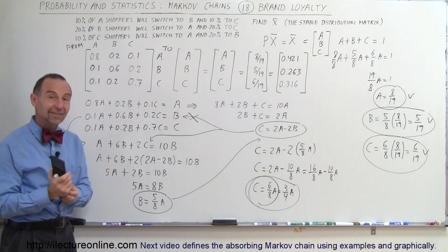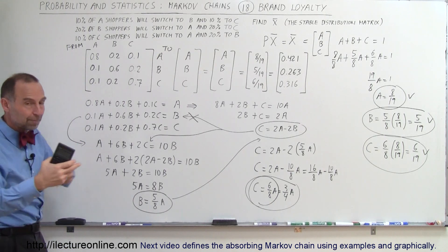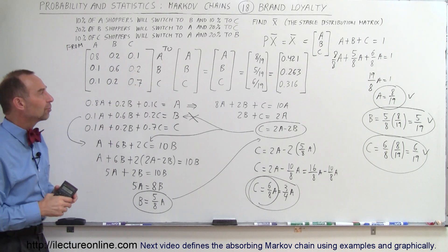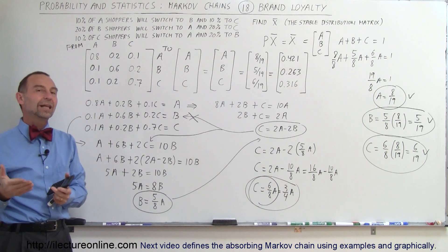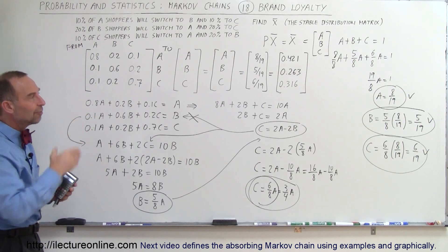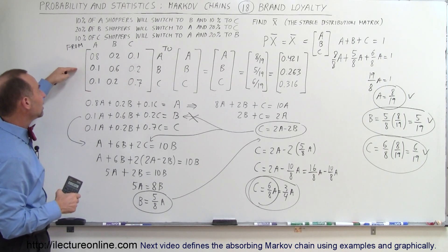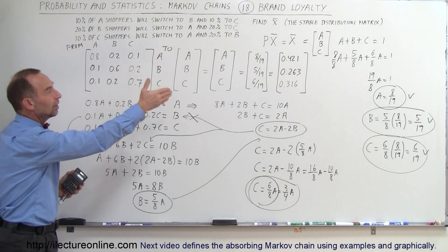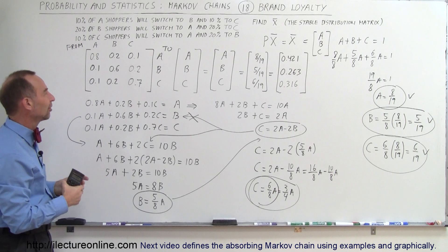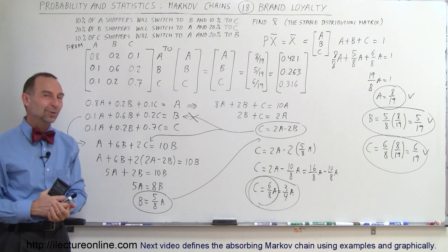This is how we find the stable distribution matrix for a situation with 3 stores where shoppers switch between stores. Eventually they settle into a fixed arrangement — a certain percentage loyally visiting each store. The stable distribution only changes if the transition matrix itself changes.